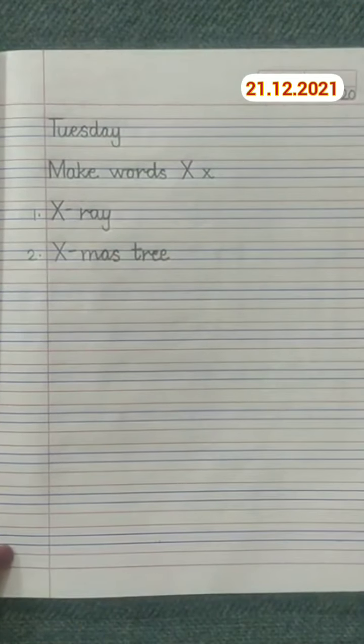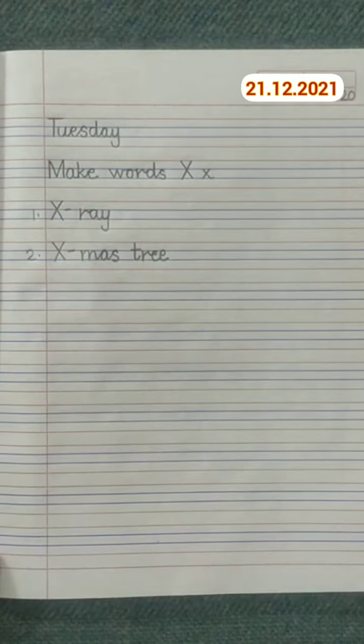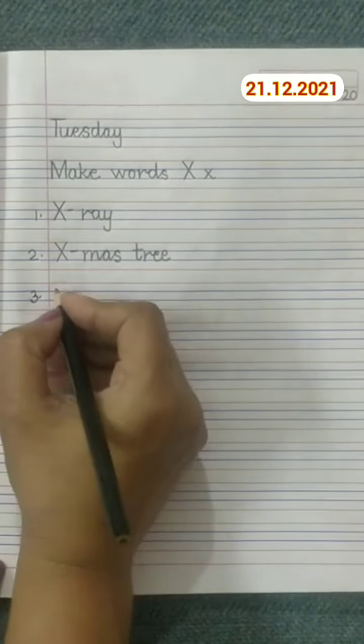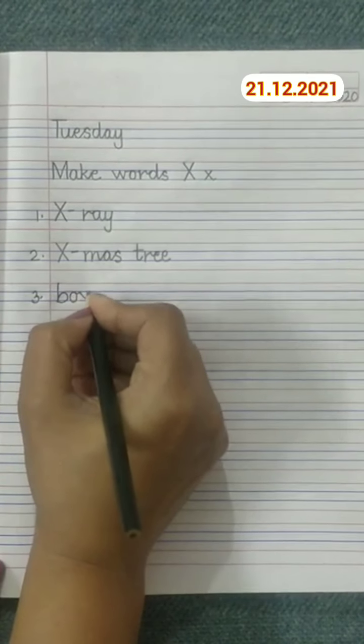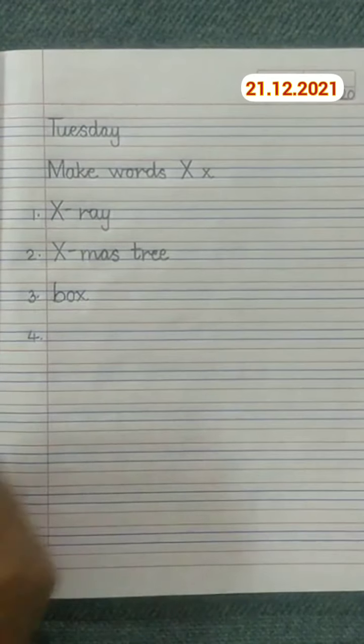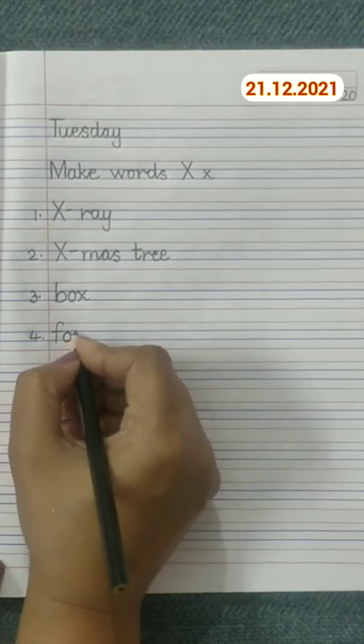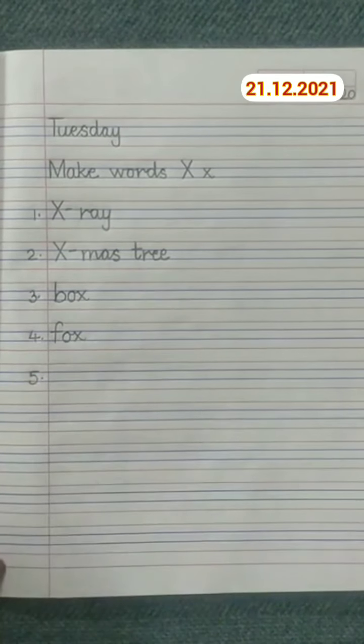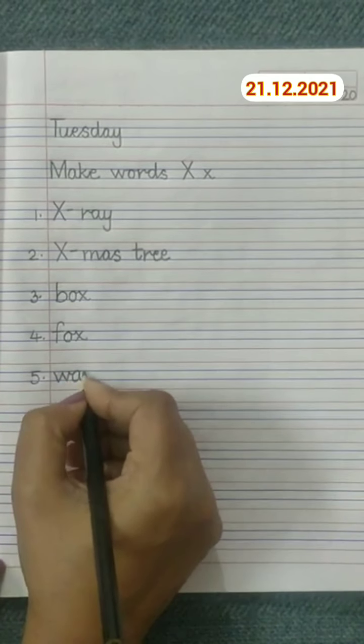two words start with letter X. Now we will write the words that end with letter X. Here write down number 3: box (b-o-x). Number 4: fox (f-o-x). Number 5: wax (w-a-x).